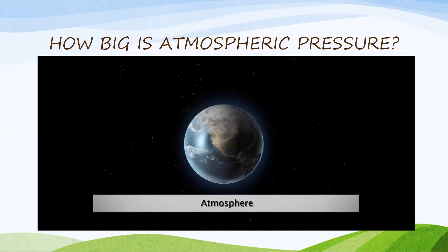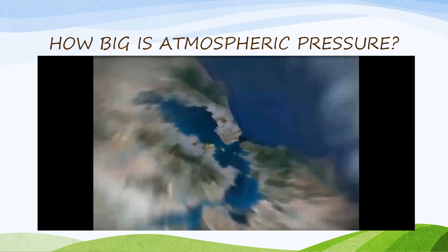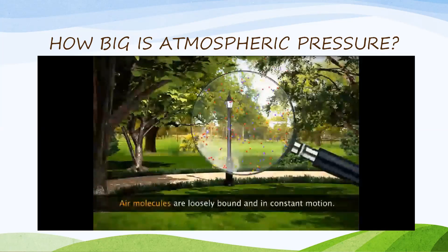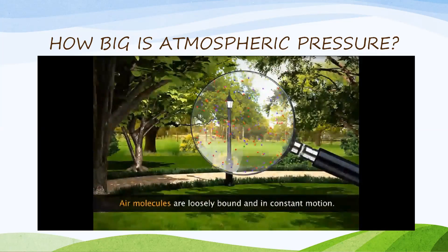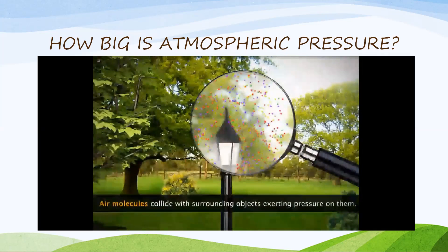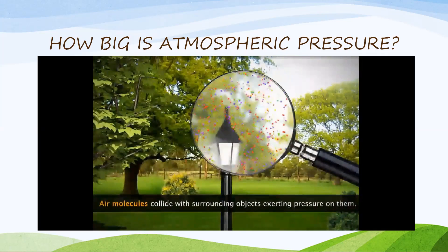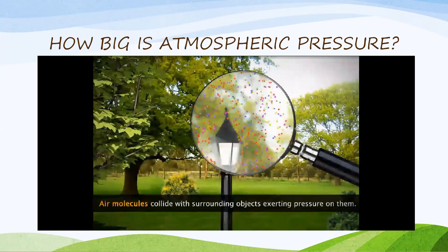The atmosphere contains different types of gas molecules — say oxygen, hydrogen, nitrogen — and all of them are in constant motion. During their constant motion, they collide with surrounding objects, and those objects experience some pressure.